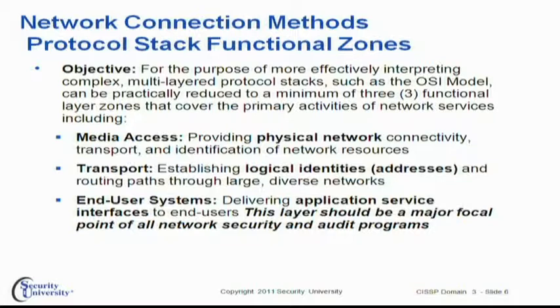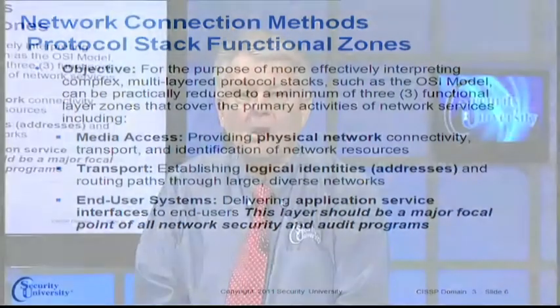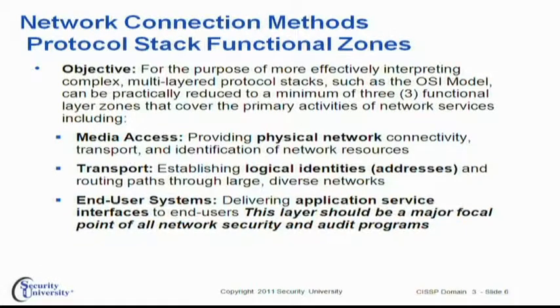Starting our journey through the network protocol stack, we break it down into three individual zones of protocols, and then expand to the OSI seven-layer model or contract to the four-layer TCP/IP model. The first zone is media access — your physical network connections, which can be done with or without wires. Transport protocols are involved with logical identities like IP addresses and the ability to route through complex network connections. Those first two zones are the plumbing system. The reason you have networks is to connect computer systems for productive interaction — but unfortunately also for malicious interaction. The third zone is end user systems, where application services are delivered, and this is the key focal point in all pursuits involving network security.